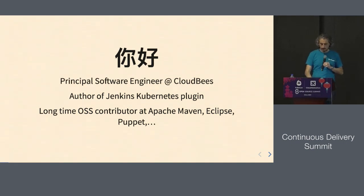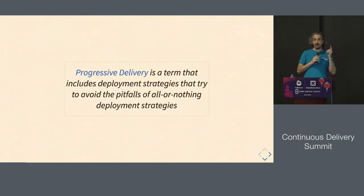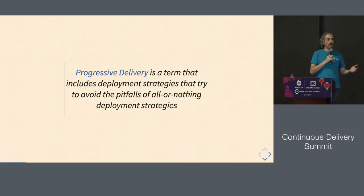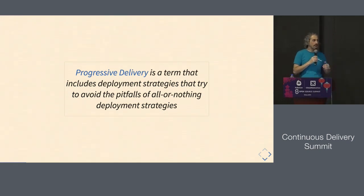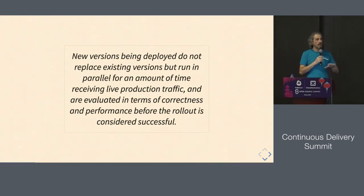Let's talk about what we came here today: progressive delivery. Progressive delivery is a term that I did not invent. It includes different deployment processes or methodologies that tries to avoid this all-or-nothing deployment. You don't want to deploy something that may break everybody's experience at the same time, so you try to deploy it a little bit at a time and in different ways. You do not replace existing versions, but you deploy new versions and run both in parallel for a period of time until you figure out if the new version is okay or is broken.